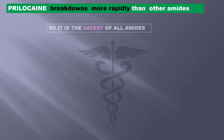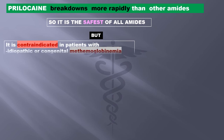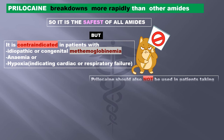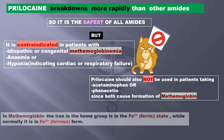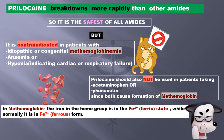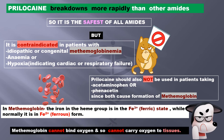Prilocaine breaks down more rapidly than other amides, so it is the safest of all amides. However, it is contraindicated in patients with idiopathic or congenital methemoglobinemia, anemia, or hypoxia indicating cardiac or respiratory failure. Prilocaine should also not be used in patients taking acetaminophen or phenacetin, since both cause formation of methemoglobin. In methemoglobin, the iron in the heme group is in the ferric state rather than the normal ferrous form, meaning methemoglobin cannot bind or carry oxygen to tissues.